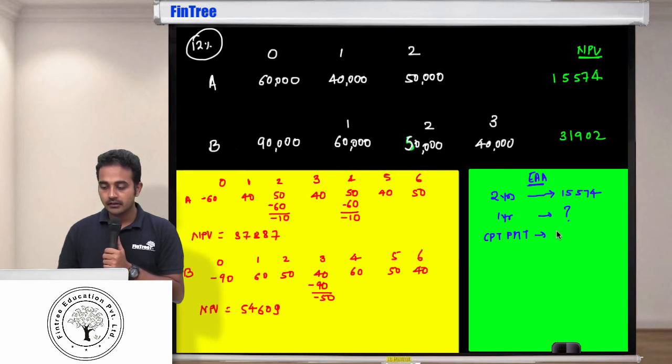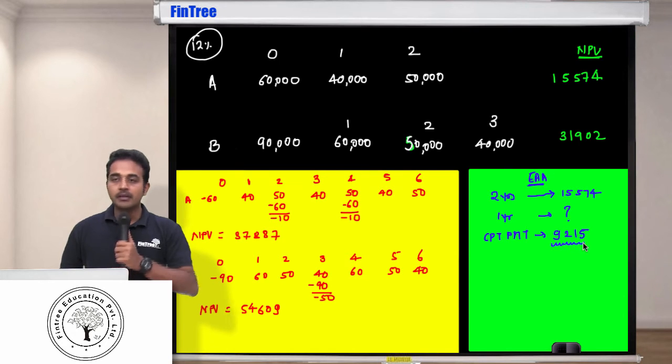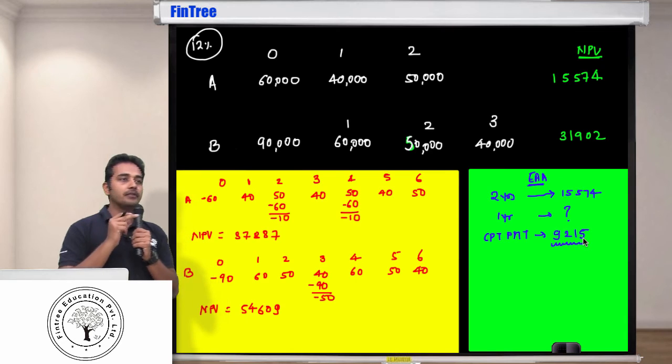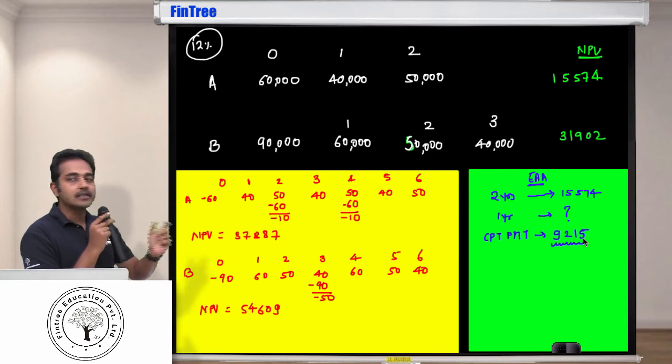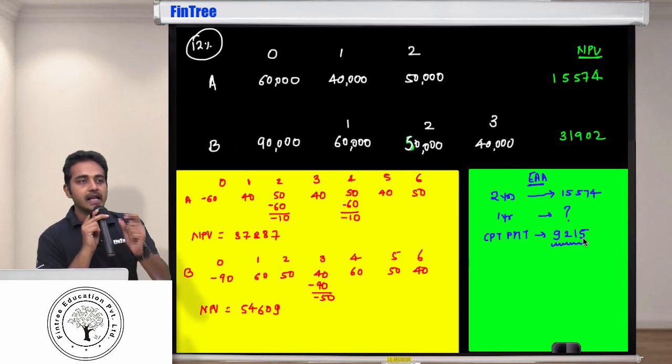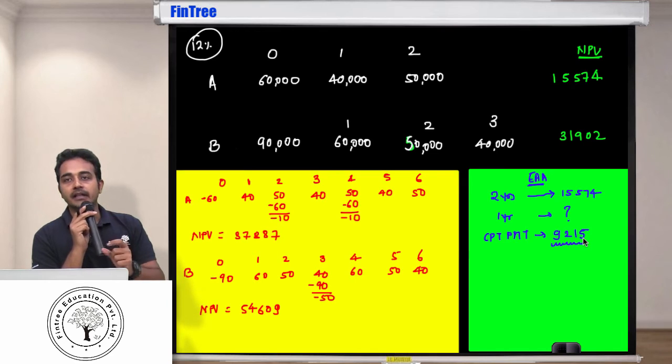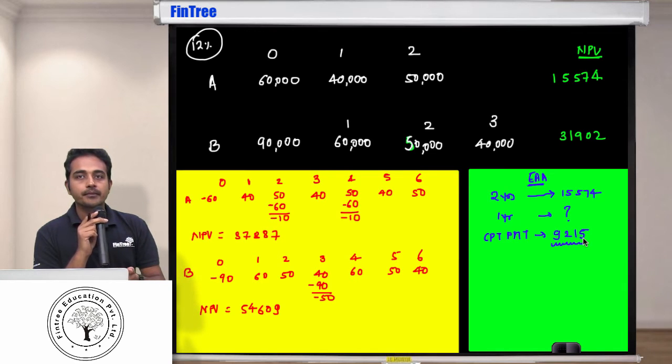How much is that? 9,215. So on an average, on an annual basis, you are going to earn 9,215. So the name of the method itself tells you how to solve this: equivalent annual annuity. Annuity is payment, correct? So what is the equivalent payment per annum? That's the answer.